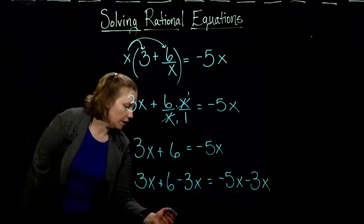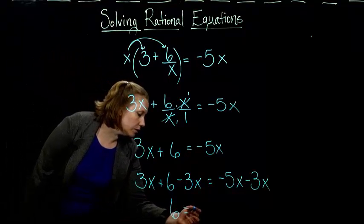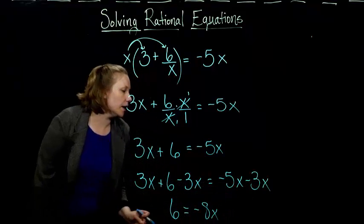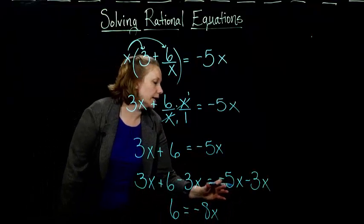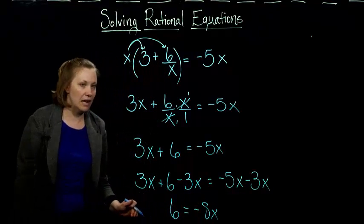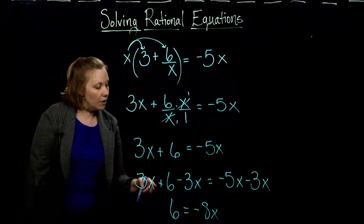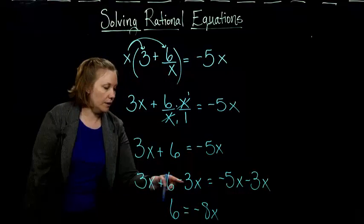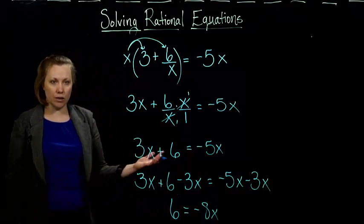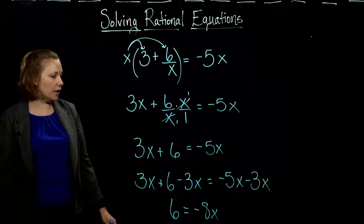And then I end up with 6 equals negative 8x. When I combine my like terms over here, negative 5x minus 3x gives me negative 8x. And then I've got just 6 left. When I subtract positive 3x and negative 3x gives me no x's over there just like I wanted.